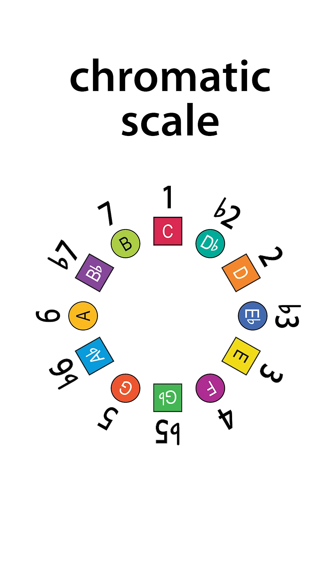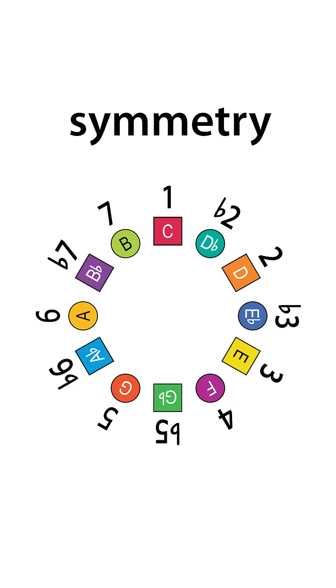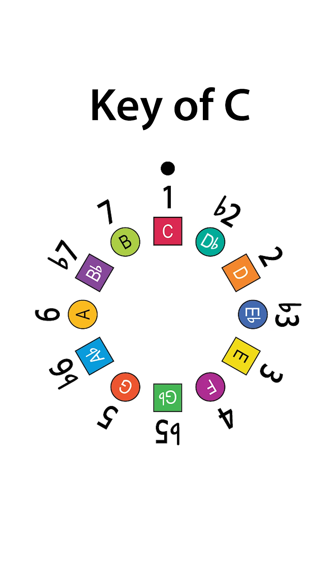We just rotate the circle of fifths back into the chromatic scale. Only now the colors highlight the symmetry of intervals that was obscured by the numbers alone. For example, in the key of C,